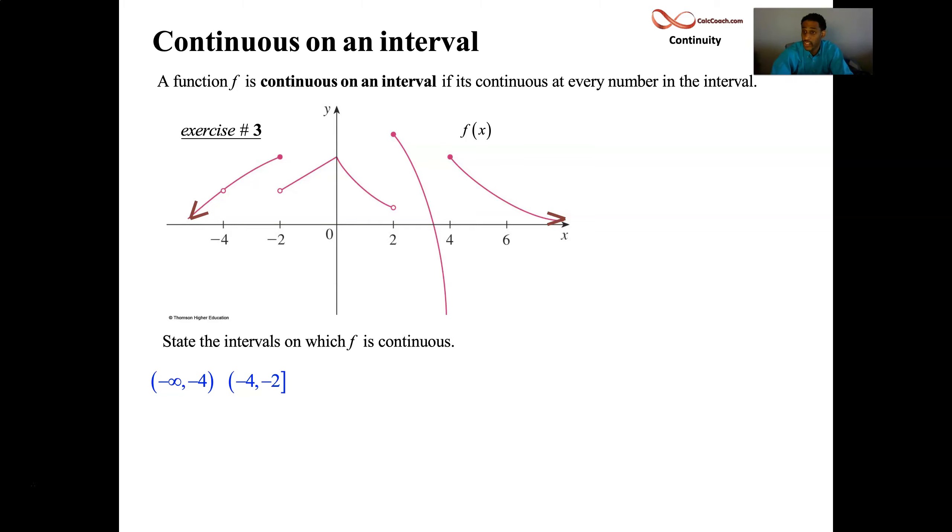All right, the next chunk of x values. You would think the next interval should be minus 2 to 0. But no, 0 is just a sharp point of the graph. It's not a point where you're discontinuous at. Go all the way from minus 2 to 2. That entire interval there, your function is continuous.